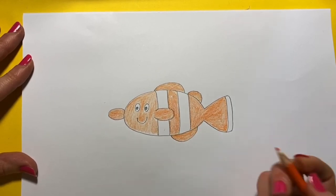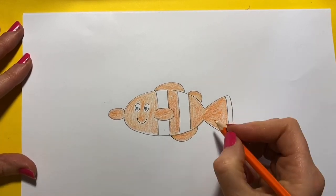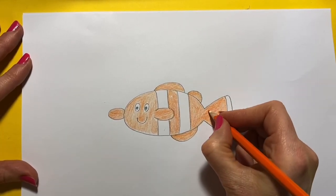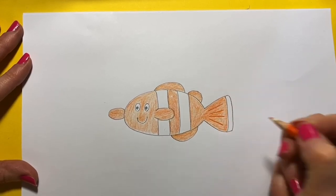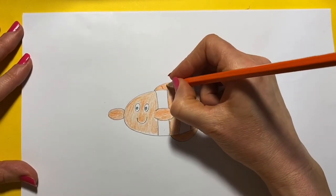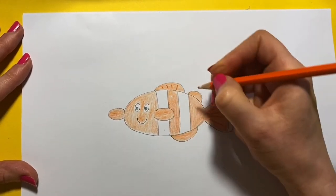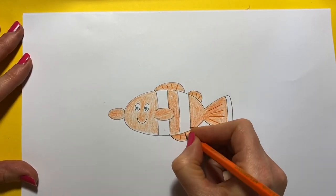There we go. I'm going to add a little bit of detail, so I'm going to get my pencil and press quite hard, and I'm going to draw some lines like this, straight lines on the fins to make them look more like fins. You could do it in black if you wanted to.